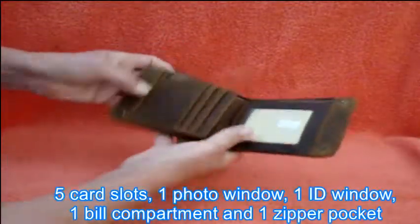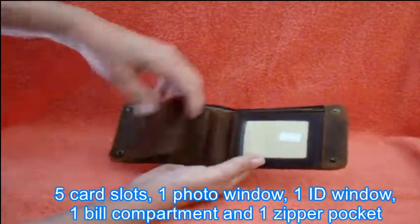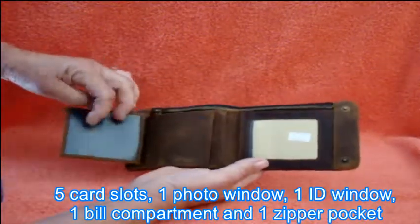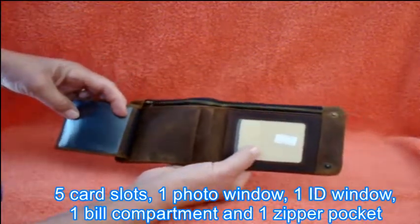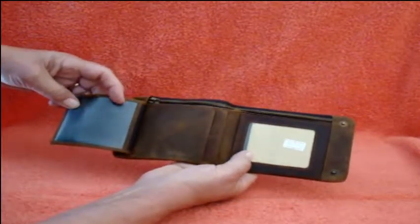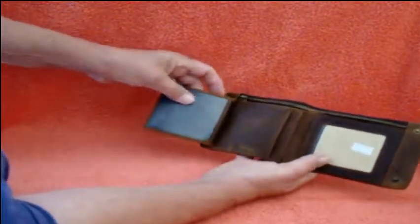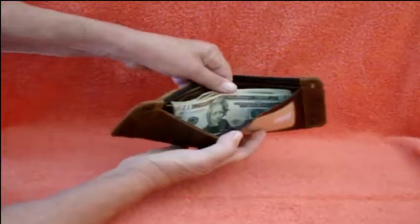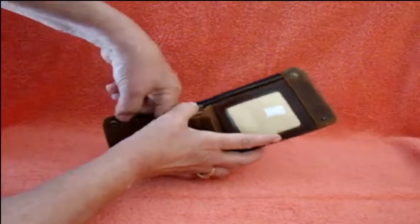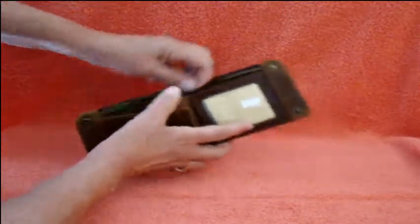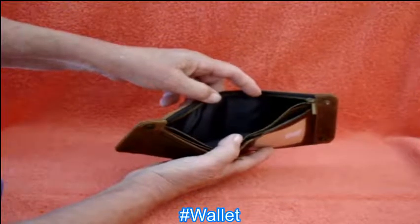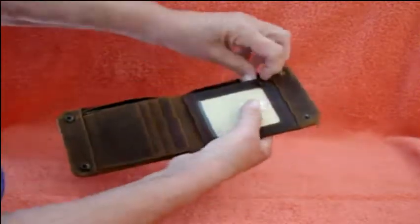It has five card compartments. It's got one ID compartment. There's one photo ID compartment. There's a bill compartment here and there's also a zipper pocket for a place if you want to put your money stash that you don't want people to know you have.